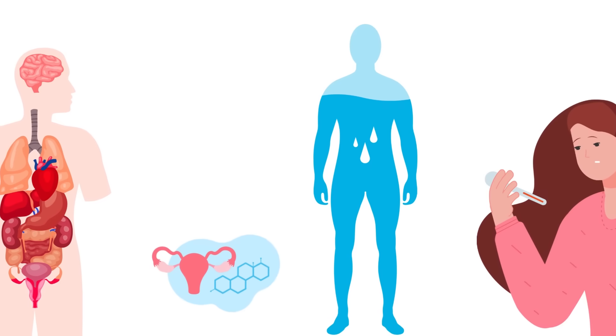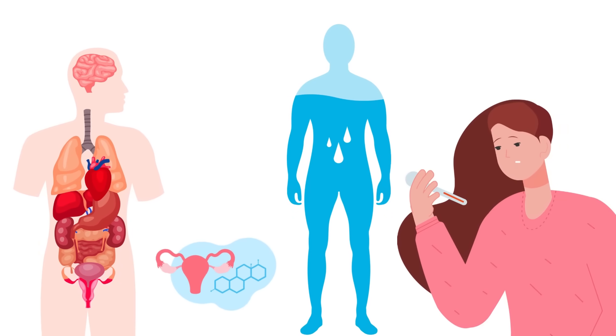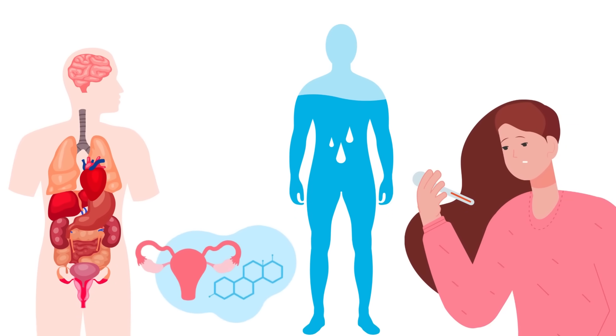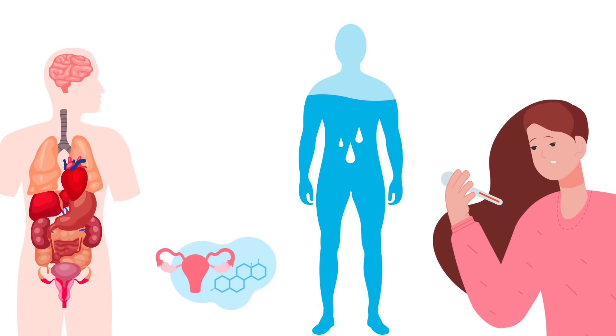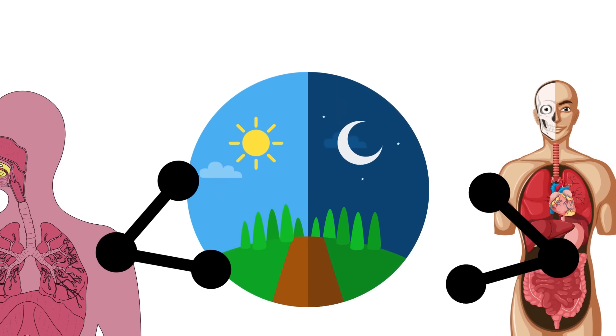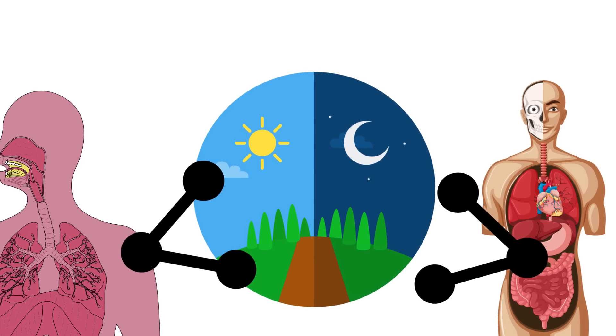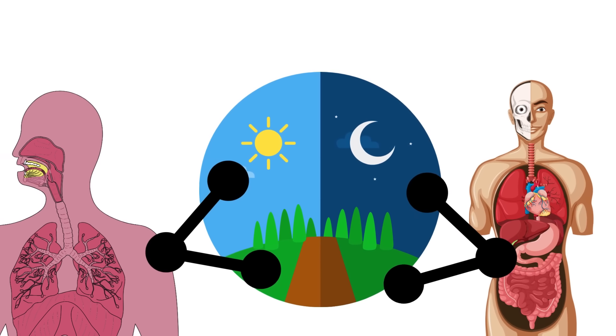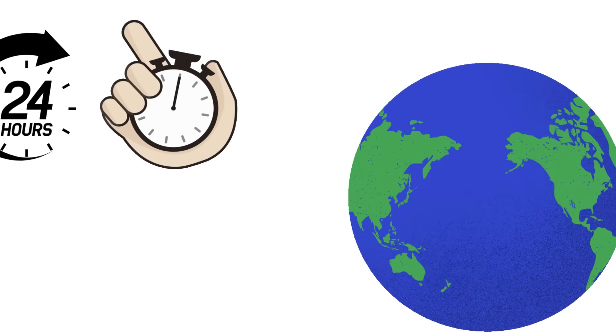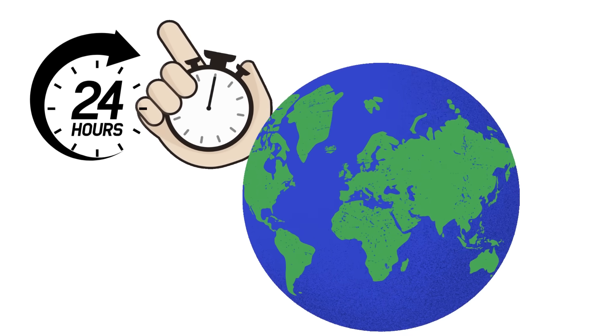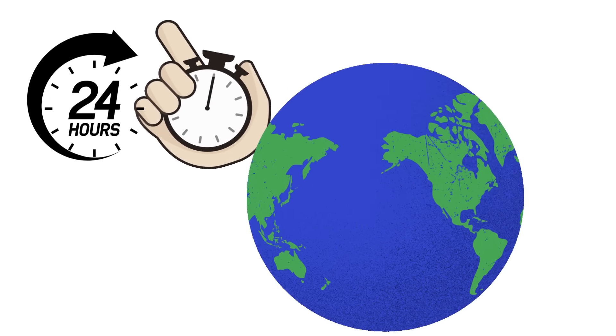Enter the circadian rhythm, our internal body clock that regulates various physiological processes, including sleep-wake cycles, hormone production, and even body temperature. This nifty little system is influenced by external cues like light and darkness, helping to keep us in sync with the natural world around us. For most people, this internal clock runs on a roughly 24-hour cycle, aligning nicely with the Earth's rotation.